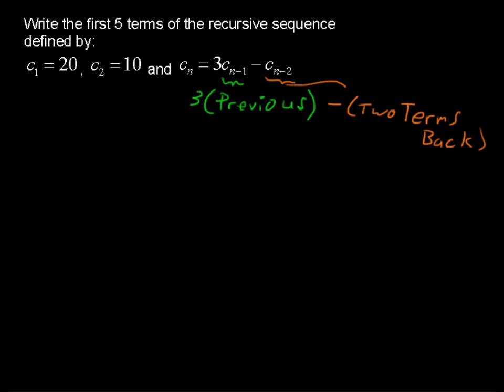So let's take a look at C sub 3. C sub 3 equals 3 times the previous term, that's C sub 2, that's 10, minus C sub n minus 2, the two terms back, that's C sub 1, so minus 20. So C sub 3 equals 30 minus 20 equals 10. I'm going to write it right here. C sub 3 equals 10.